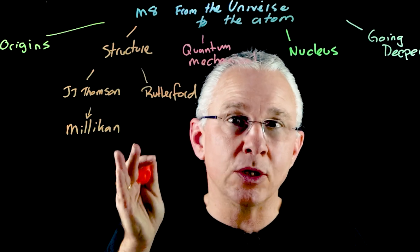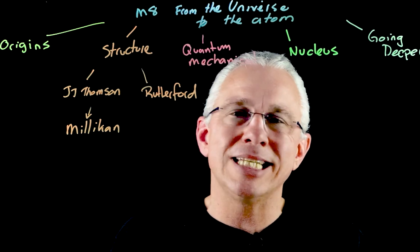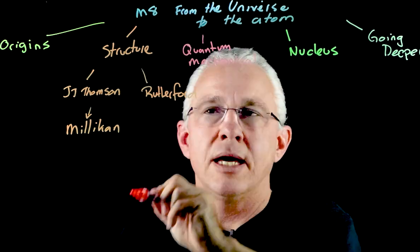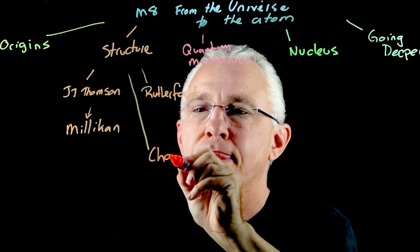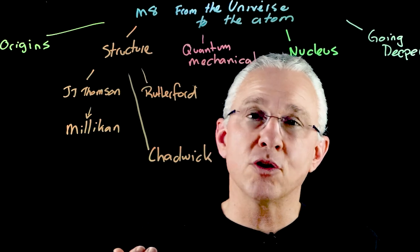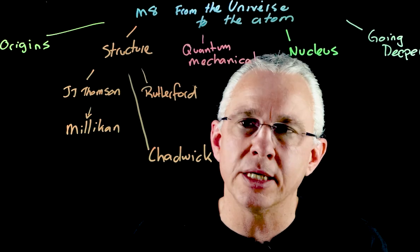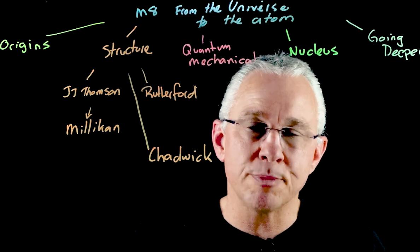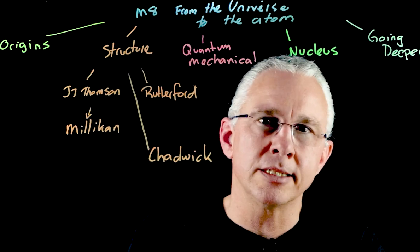Rutherford subsequently also understood that the nucleus itself is made up of particles, leading to the understanding that the nucleus contains protons. Then in 1932, James Chadwick, by using the law of conservation of momentum and the law of conservation of energy, established that the nucleus is not just made up of protons but also contains uncharged particles, which we now refer to as neutrons.